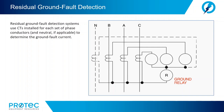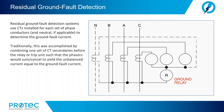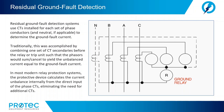Residual ground fault detection systems use CTs installed for each set of phase conductors, and neutral if applicable, to determine the ground fault current. Traditionally, this was accomplished by combining one set of CT secondaries before the relay or trip unit such that the phasors would cancel, yielding the unbalanced current equal to the ground fault current. In most modern relay protection systems, the protective device calculates the current unbalance internally from the direct input of the phase CTs, eliminating the need for additional CTs.